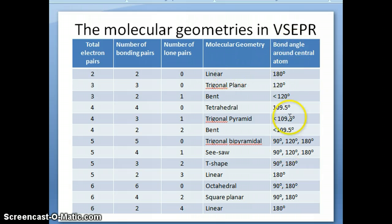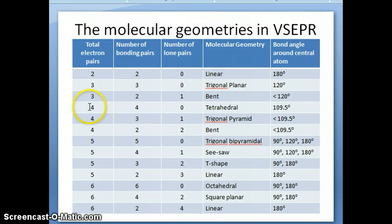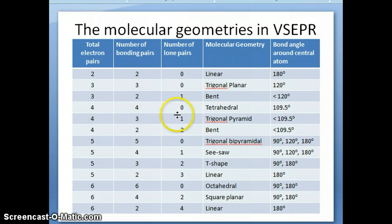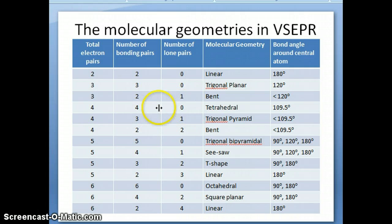The last column of the table shows the bonding angle between two atoms around the central atom. Let's take the tetrahedral case as an example. If you have a total of four electron pairs, there are three different possibilities. If all four are bonding pairs — zero lone pairs — the structure is tetrahedral.